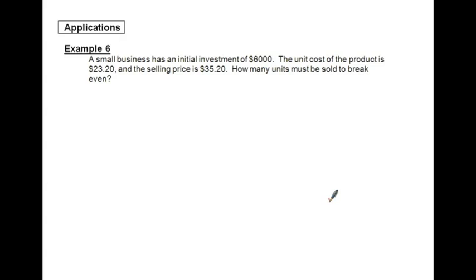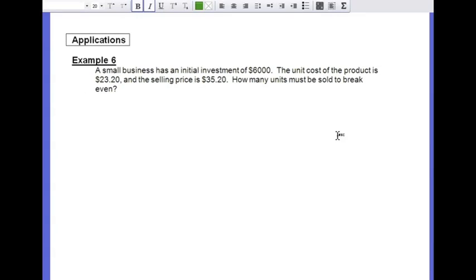So now we're going to look at example number 6, which is an investment problem here. A small business has an initial investment of $6,000. The unit cost of product is $23.20. And the selling price is $35.20. How many units must be sold to break even? That break even point is referring to the place of how many items you need to sell, so you're actually starting to make a profit. Before that point, you're losing money. And after that point, you are making money.